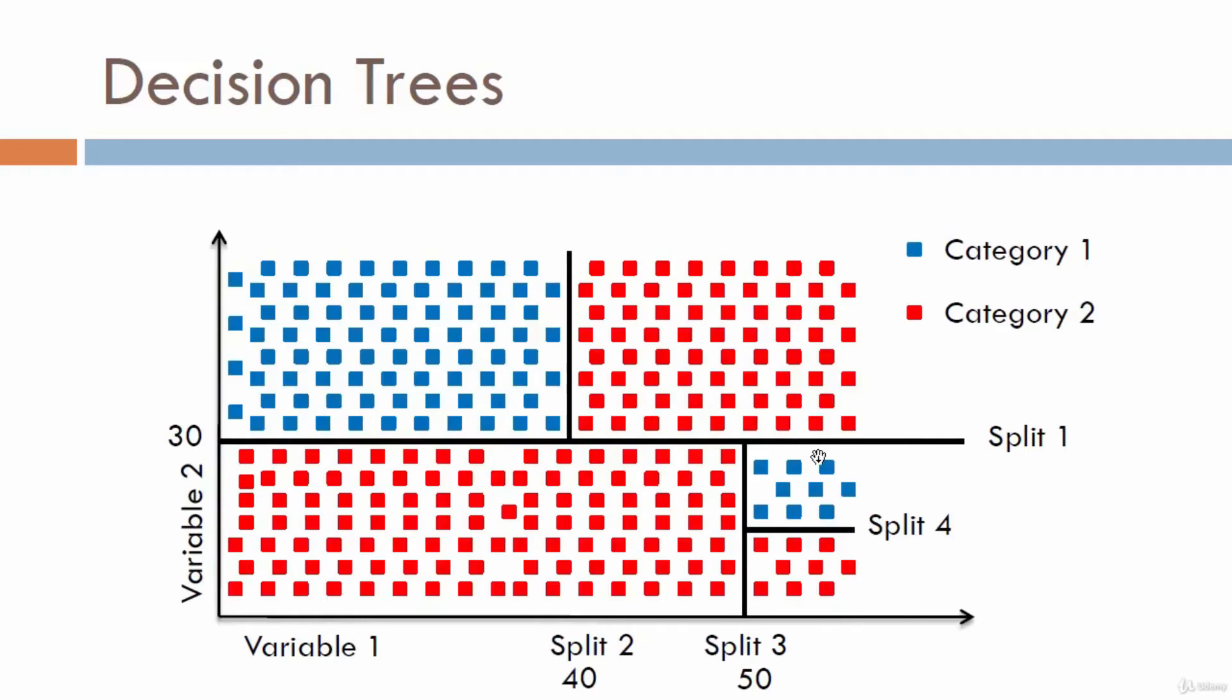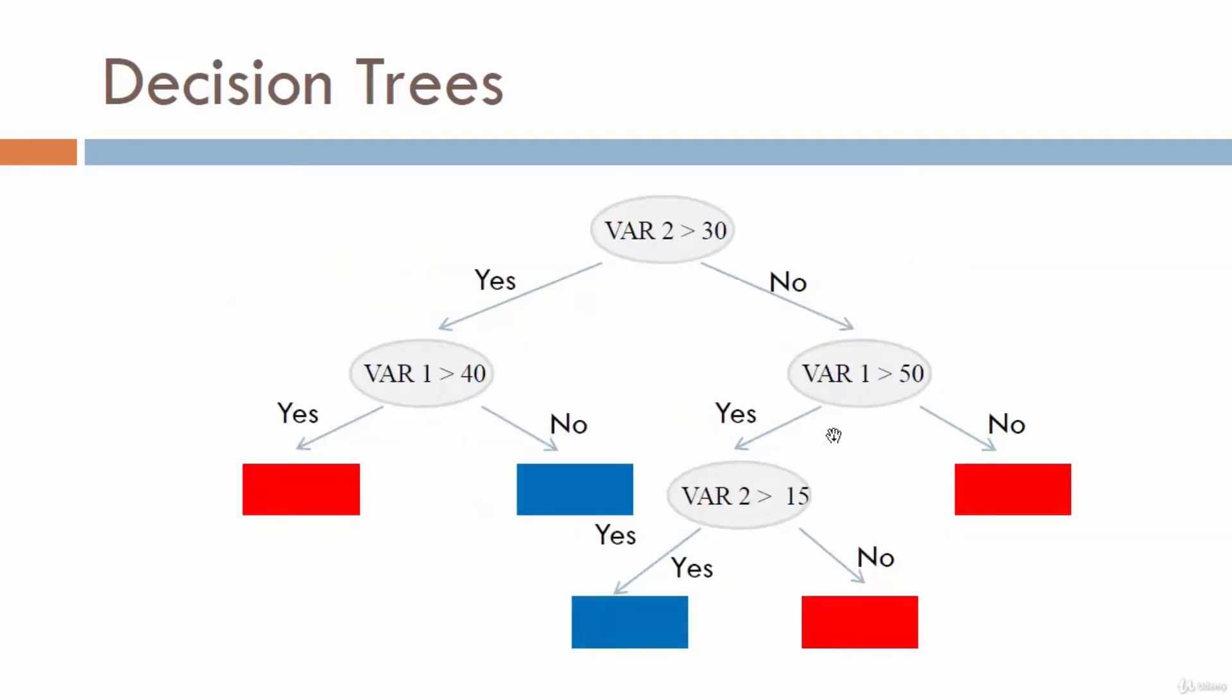Similarly, we can keep on adding the split information to the decision tree. When you encounter a data point from this tree, we will be able to exactly determine its corresponding category. For instance, if I knew that a point has variable 2 greater than this value, then we will move on this branch, and then we will look at its variable 1 value and go to the appropriate branch.